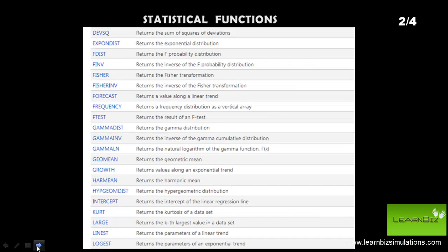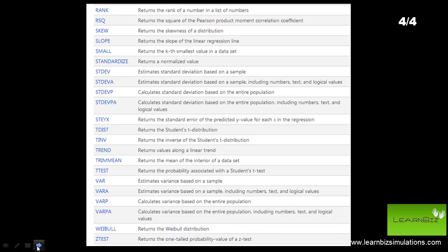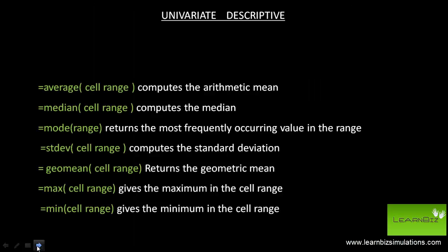This is an entire list of the statistical functions of Excel. Here we will look at univariate descriptive functions. As you can see, all functions take one argument, that is the cell range that holds the values to perform the functions on.